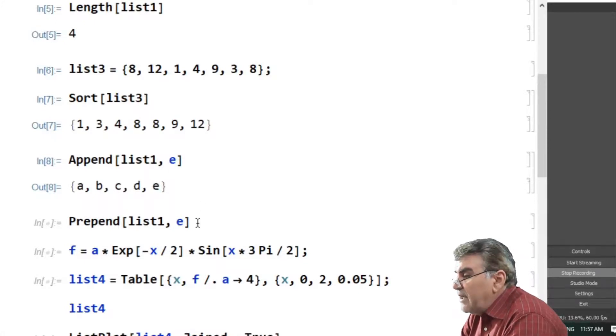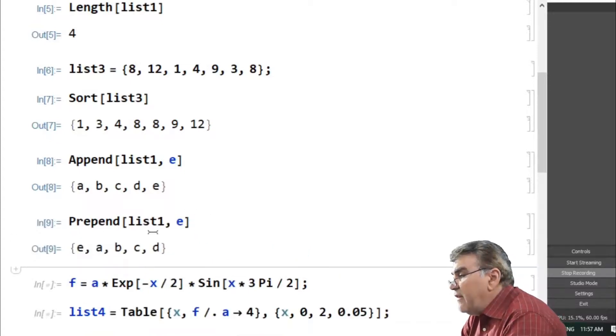Similarly, I can add e as the first element by enclosing it inside the square brackets as an argument to the prepend command. If I run this out, you will see e is added as the first element to list1.